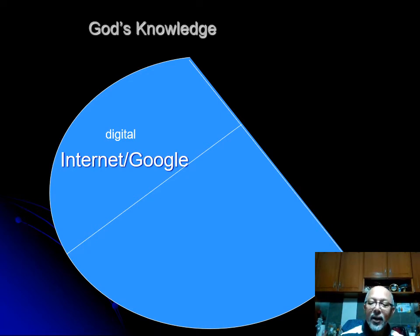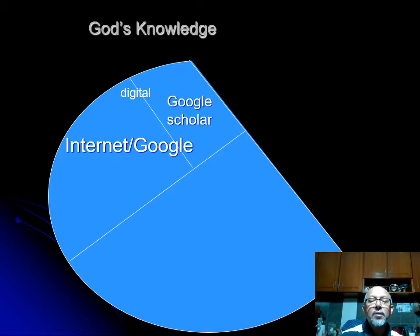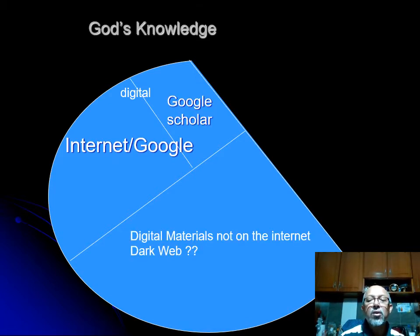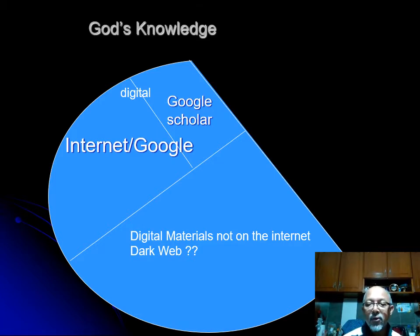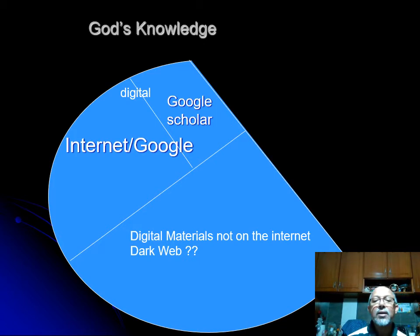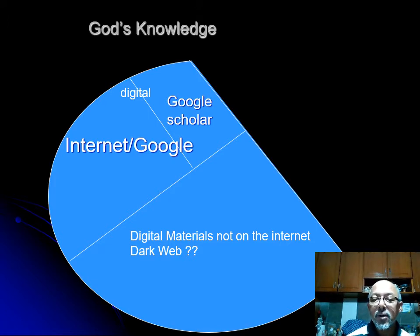For example, digital materials not on the internet — somebody like you or myself may capture photos or take videos and not necessarily connect them to the internet. If we put that on Facebook or Instagram, of course it becomes digital material connected to Google. But if it remains on our computer, camera, or mobile phone, then it is digital material not on the internet. There are also many other forms, such as filmmaking footage — a lot of digital materials are not on the internet.